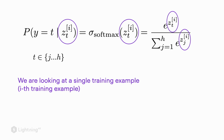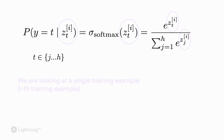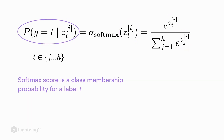So i stands for the i-th training example, and z is the net input — we are taking a look at the net input of the i-th training example. Similar to the logistic activation function, the Softmax activation function is a score that represents a class membership probability.